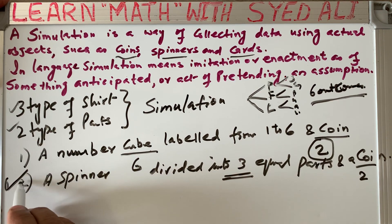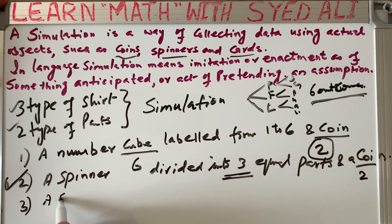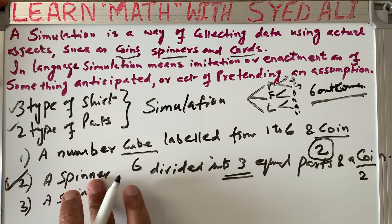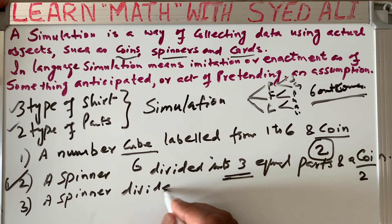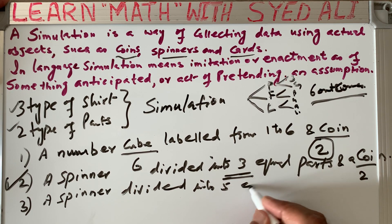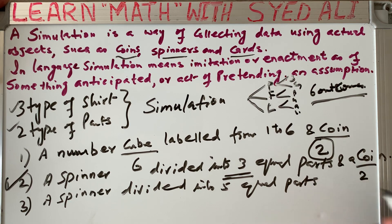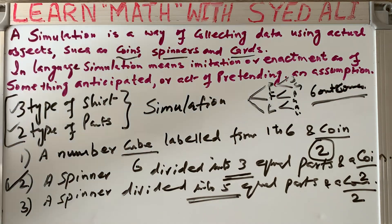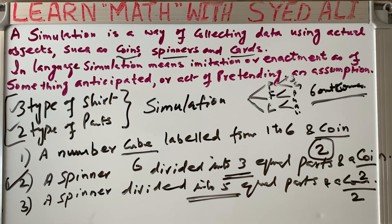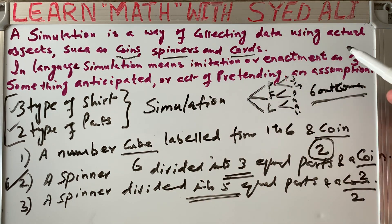Statement C: a spinner divided into 5 equal parts and a coin. The coin gives 2 outcomes and the spinner has 5 equal parts, so the total number of outcomes would be 10. This situation does not relate to our situation, which has 3 types of shirts and 2 types of pants giving 6 outcomes. So this is also not the correct simulation.